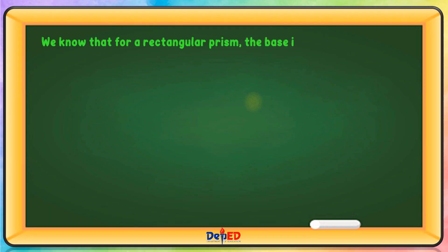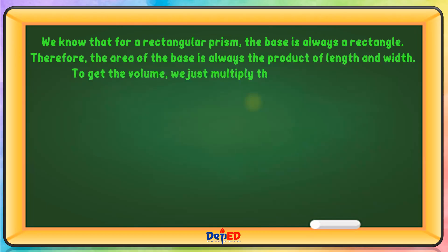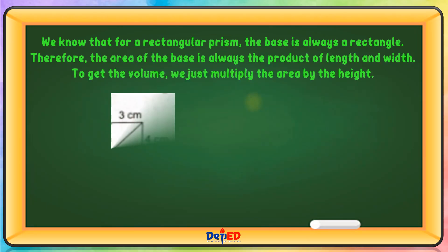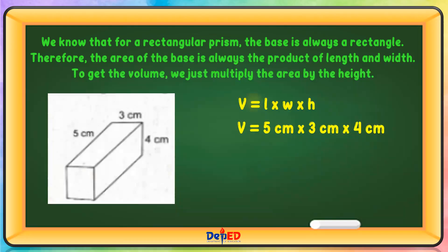We know that for a rectangular prism, the base is always a rectangle. Therefore, the area of the base is always the product of length and width. To get the volume, we just multiply the area by height. Volume is length times width times height. For example, 5 cm × 3 cm × 4 cm equals 60 cubic centimeters.